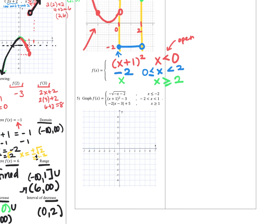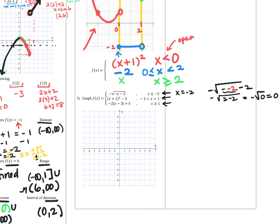For number five, I focus on the endpoints first. When x equals negative two in the first piece: negative square root of negative negative two minus two simplifies — the square root of positive two minus two is the square root of zero, which is zero. So at x equals negative two, the output is zero, giving the closed circle point (−2, 0).